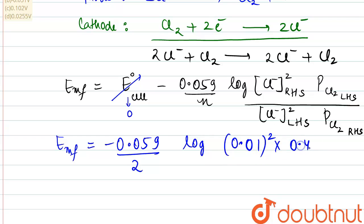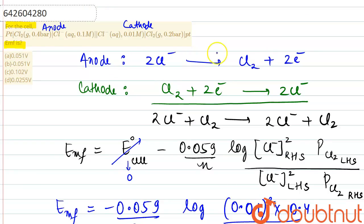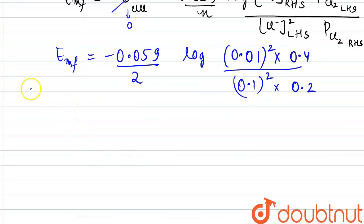Divided by chloride ions on the left 0.1 square, pressure on the right-hand side. This is already given in the question, this is 0.4 bar, this is 0.2. So we are substituting these values only.